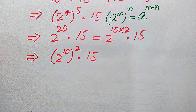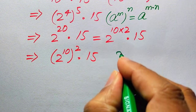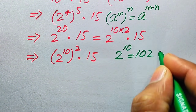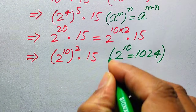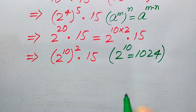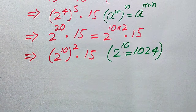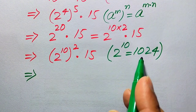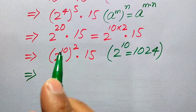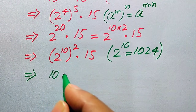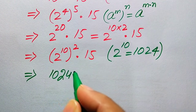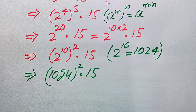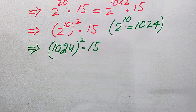We know that 2 to the power of 10 equals 1024. When we replace 2 to the power of 10 with 1024, the expression becomes 1024 squared, multiplied by 15.